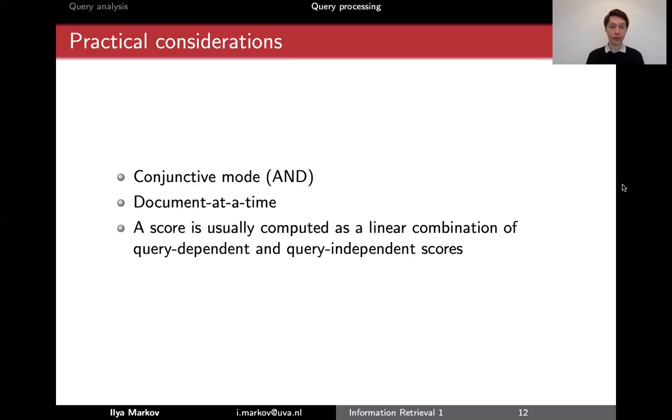Basically a score is computed as a linear combination of query dependent and query independent scores. We will mostly talk about query dependent scores, which means how can we score a document given a query using BM25 or other methods. Query independent scores only score documents, there's no query. We only decide whether the document is good in general based on its HTML structure, length, or a very widespread technique - PageRank. PageRank doesn't depend on any query but still gives a score to every document.